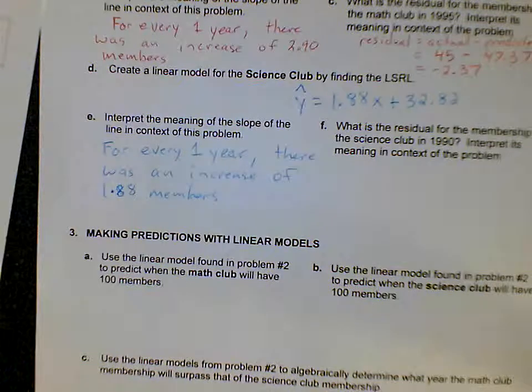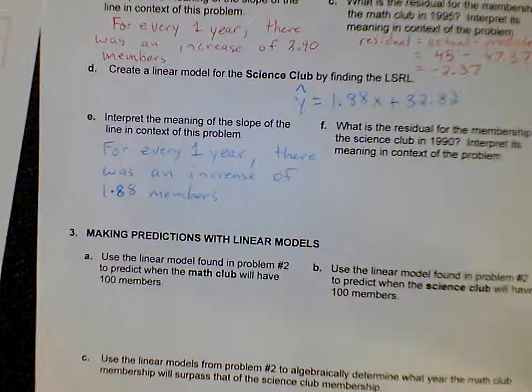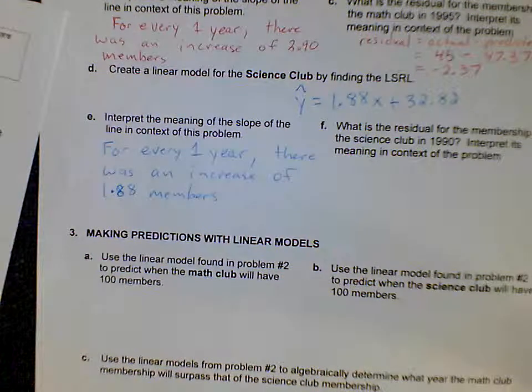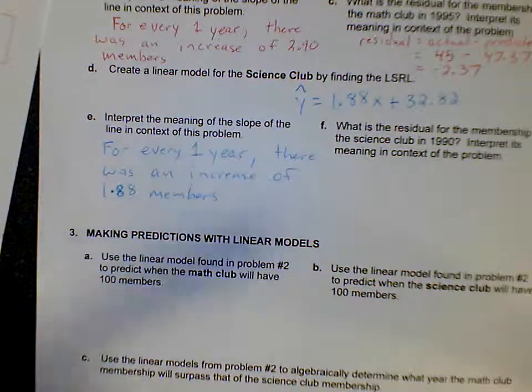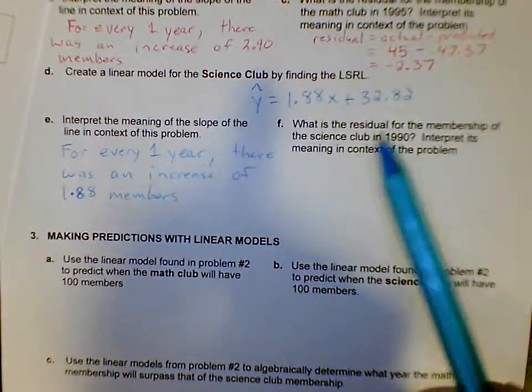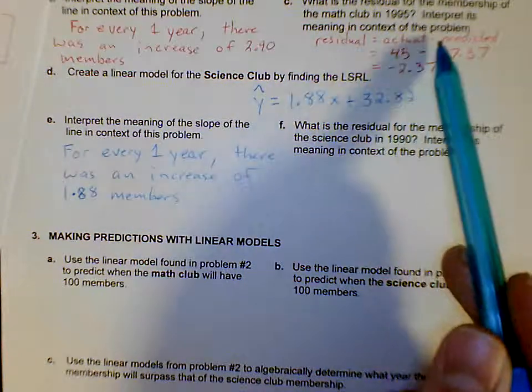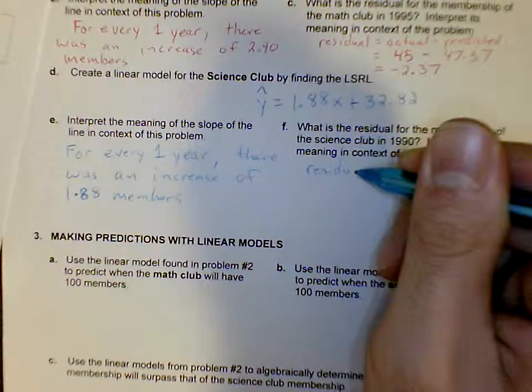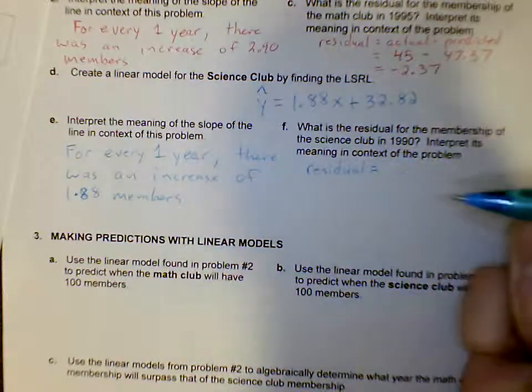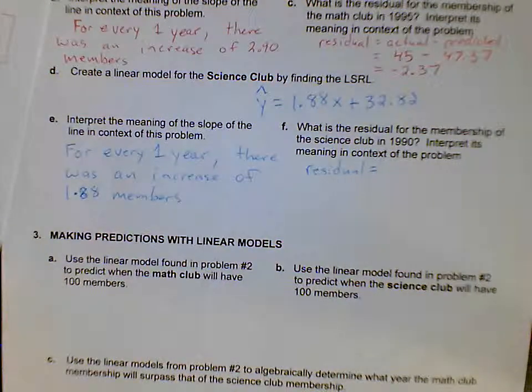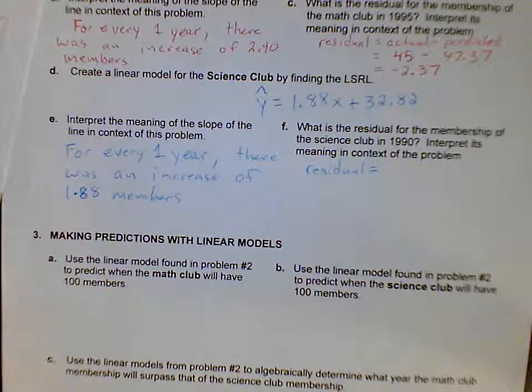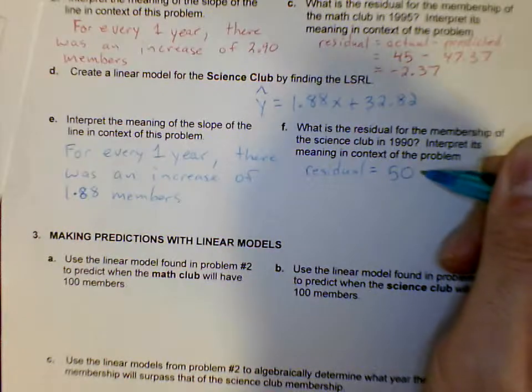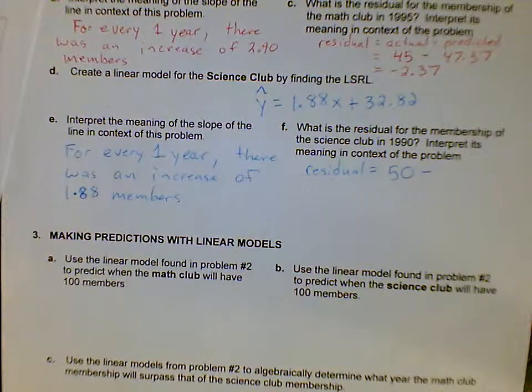And question F, what is the residual for the membership of the science club in 1990? Interpret the meaning in context of the problem. So remember from question C, residual equals actual minus predicted. So residual is going to equal our actual minus predicted. Our actual value for 1990 is going to be 50.